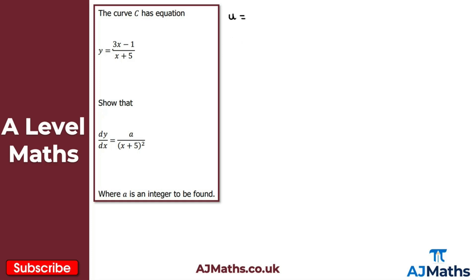So u is the numerator, that's 3x minus 1. And v is the denominator, so that's x plus 5. To use the quotient rule we also need u prime and v prime. Differentiating 3x minus 1 with respect to x gives u prime equals 3, and differentiating x plus 5 gives v prime equals 1.